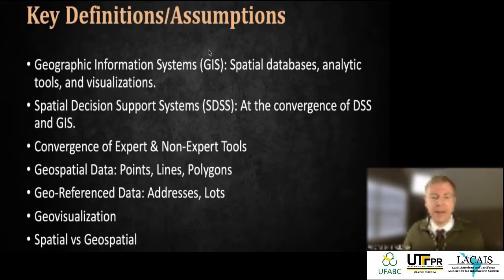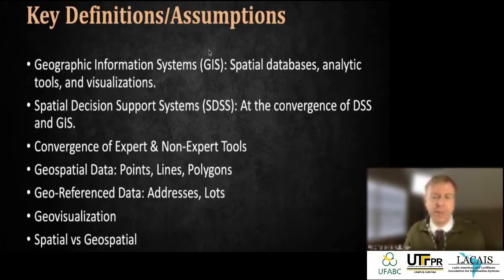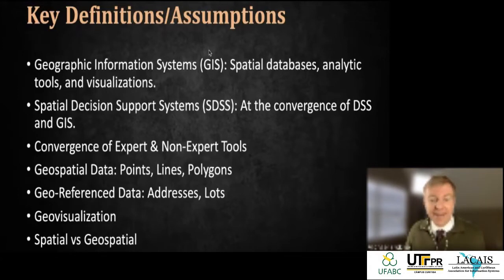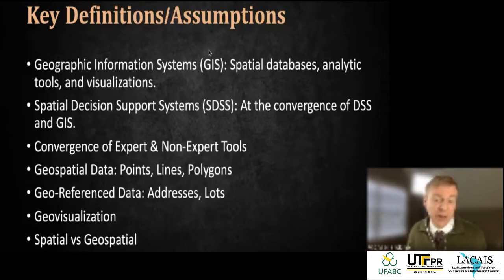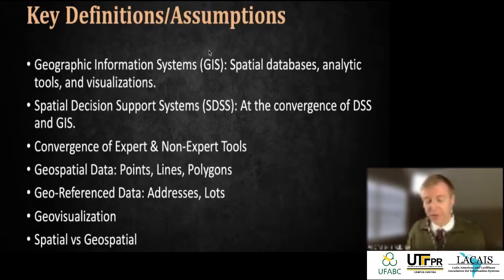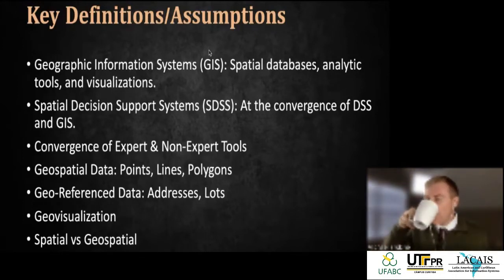Geospatial data comes in several forms. Points are latitude/longitude coordinates plotted as dots on a map. Lines connect points and can represent roads or rivers, and you can measure distances along them. Polygons are geographic shapes representing cities, buildings, lakes, or oceans — and you can determine whether points are inside or outside those shapes. So geospatial data isn't just points; it includes lines and polygons as well.